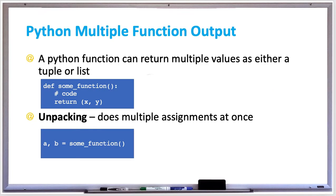It's possible for your Python function to return multiple values rather than a single value like other programming languages. Your Python program can return a tuple or a list containing as many values as you want. And then when you are calling that function later on, you can use unpacking, which does multiple assignments at once. Let's try this out in an example.